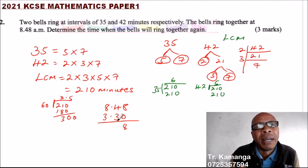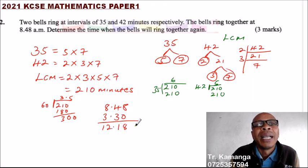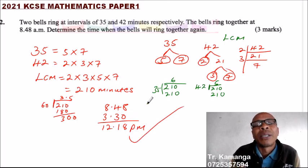This is 78 minus 60 because we are working with hours. You will be left with 1. We carry 1. This is 9 plus 2 is 12. It means that the bells will ring together at 12:18, this will be PM.